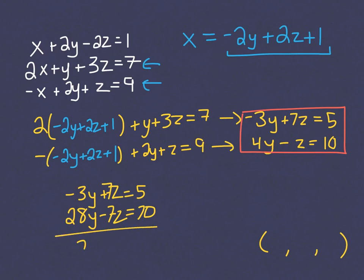Now I have 25y equals 75, so y must equal 3.